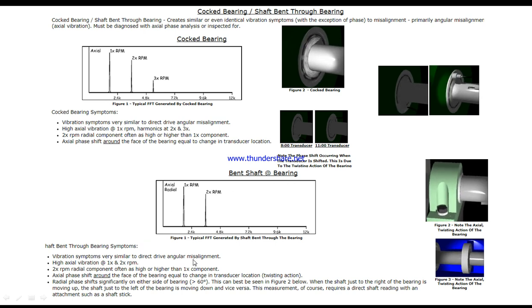For shaft band through bearing, we have vibration similar to angular misalignment. High axial vibration at 1x and 2x RPM, with 2x RPM radial component often as high as the 1x component. Axial phase shift around the face of the bearing equals the change in transducer location due to twisting action. Radial phase shows